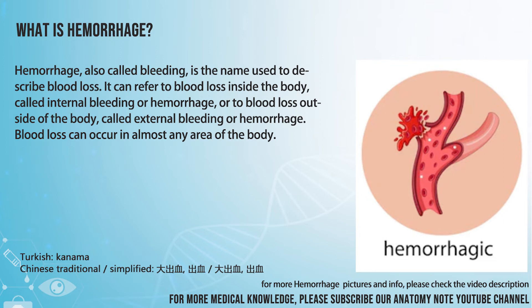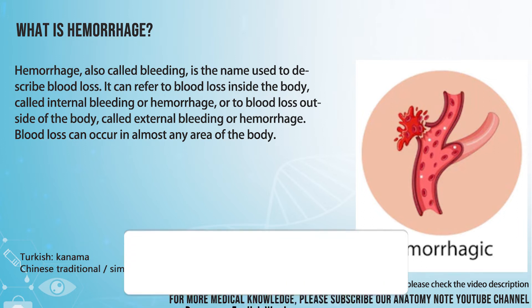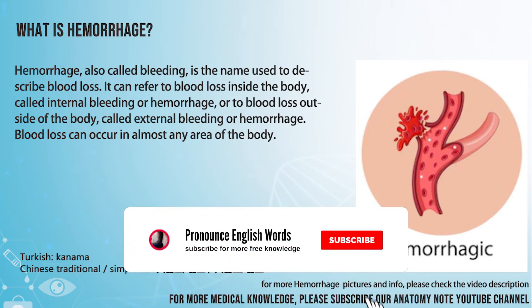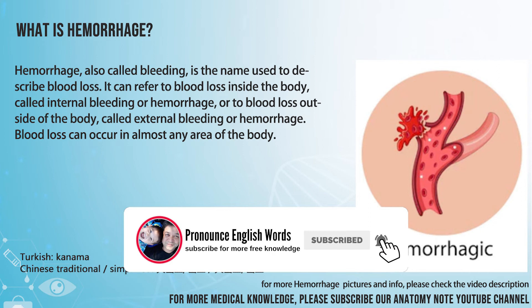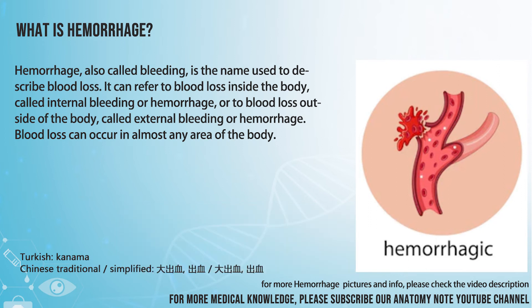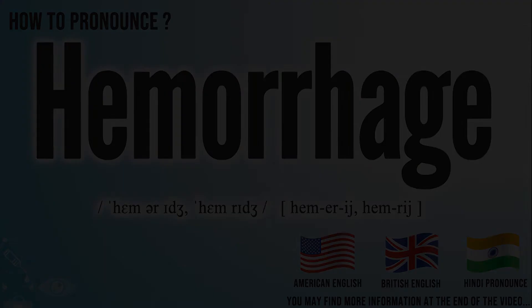It can refer to blood loss inside the body, called internal bleeding or hemorrhage, or to blood loss outside of the body, called external bleeding or hemorrhage. Blood loss can occur in almost any area of the body.